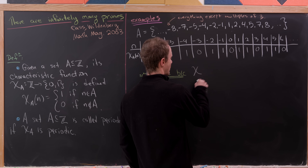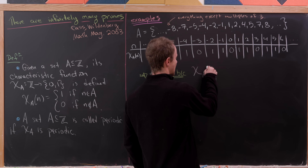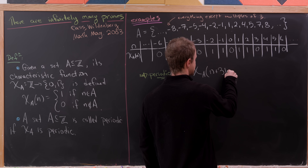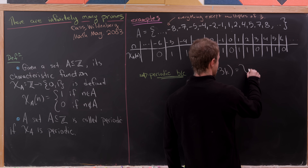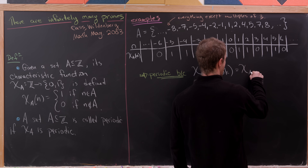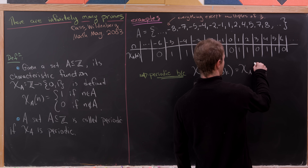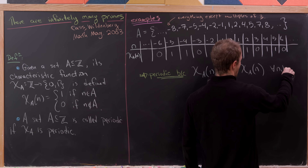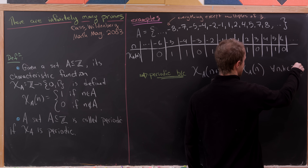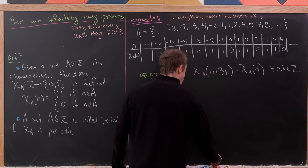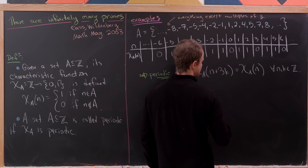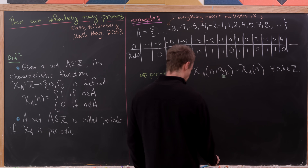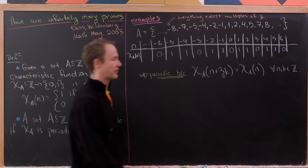This is pretty clearly periodic — it has a period of 3. In other words, chi_A evaluated at n plus 3k equals chi_A evaluated at n, for all integers n and k. This number 3 is what gives us a period of 3.